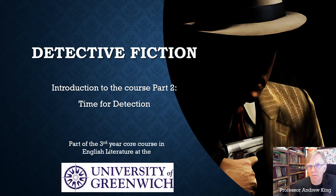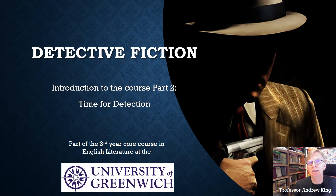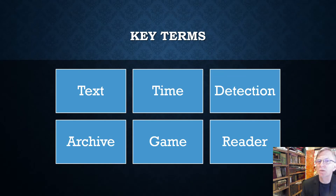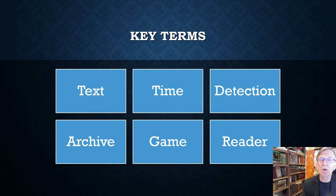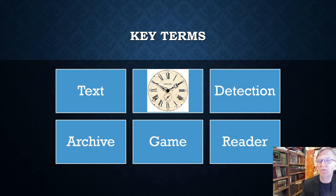In this part of the lecture, I want to be focusing mainly on the idea of time in detective fiction. Time is incredibly important. How time is organised in detective fiction is fundamental to the nature of detective fiction. Time is one of the six key terms that I introduced in part one of this introduction. It's so important here I'm going to block it out and use instead a symbol — the Newgate clock.